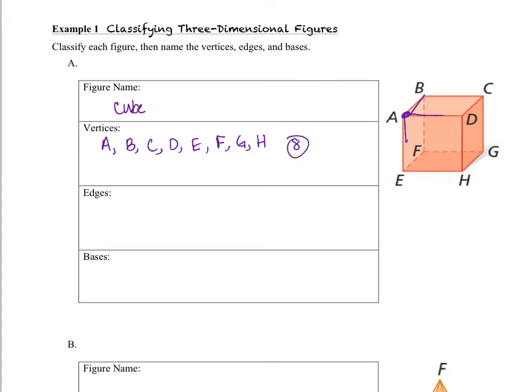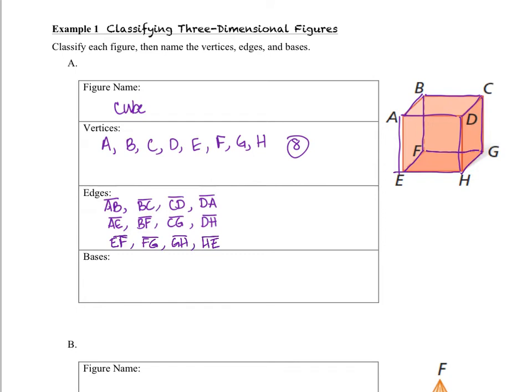Now let's talk about the edges. The edges are anytime we have two faces that come together. So the edges are basically going to be all the segments on our cube. We have edges AB, BC, CD, DA. We've also got edges segment AE, segment BF, segment CG, segment DH. And we've got segments EF, FG, GH, and HE. Those are all of the edges on our square cube, and there are 12 of them.